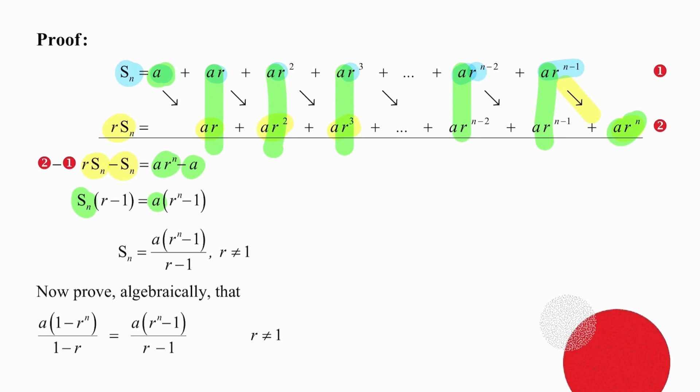Dividing both sides by r minus 1 gives us the answer we're looking for, which is that Sn is equal to a times r to the n minus 1 over r minus 1. Remember to state that r cannot be 1.